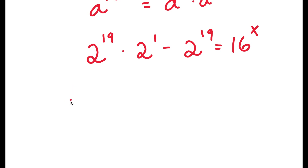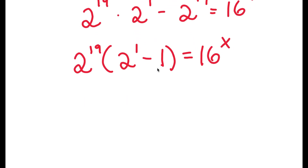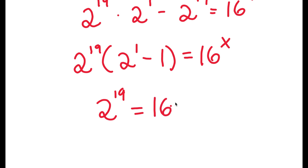From here, if I factor out 2 to the power of 19 from my left hand side, I get 2 to the power of 19 times 2 to the power of 1 minus 1 is equal to 16 to the power of x. And 2 to the power of 1 minus 1 is simply equal to 1, and anything times 1 is itself. So I have 2 to the power of 19 is equal to 16 to the power of x.